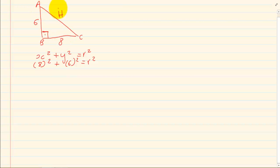What is important is that the h or the r is always on its own. So we have 64 plus 36 is equal to r squared. r squared is equal to 100. r is equal to 10.